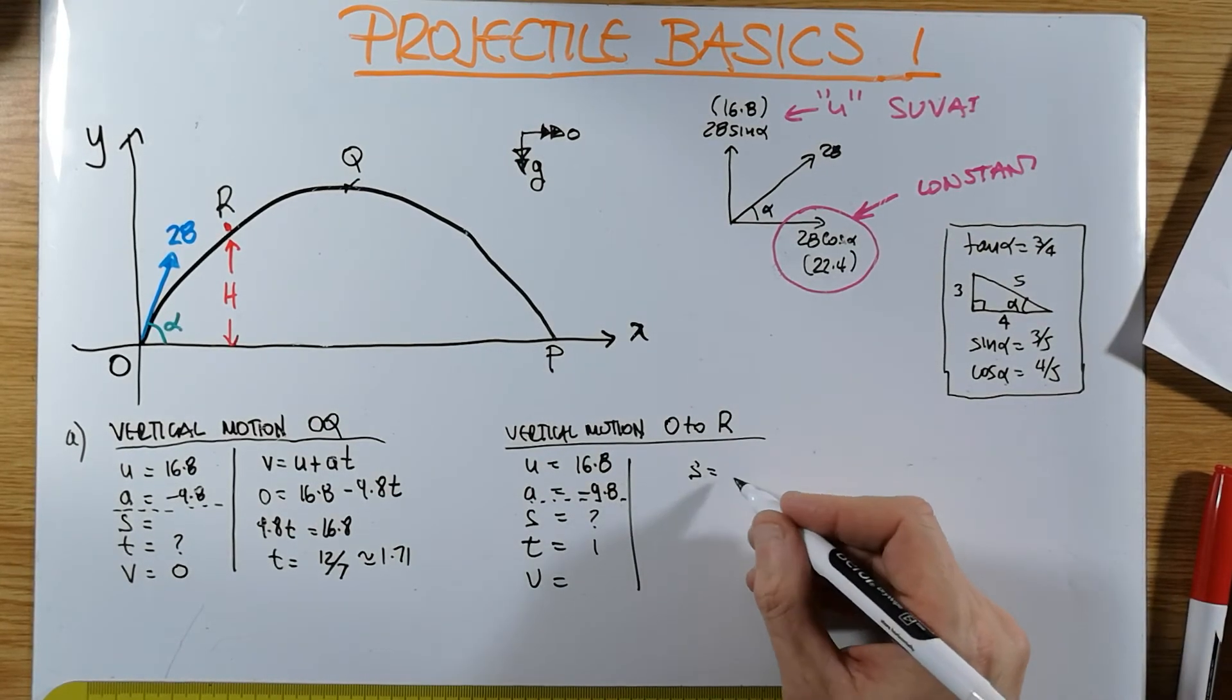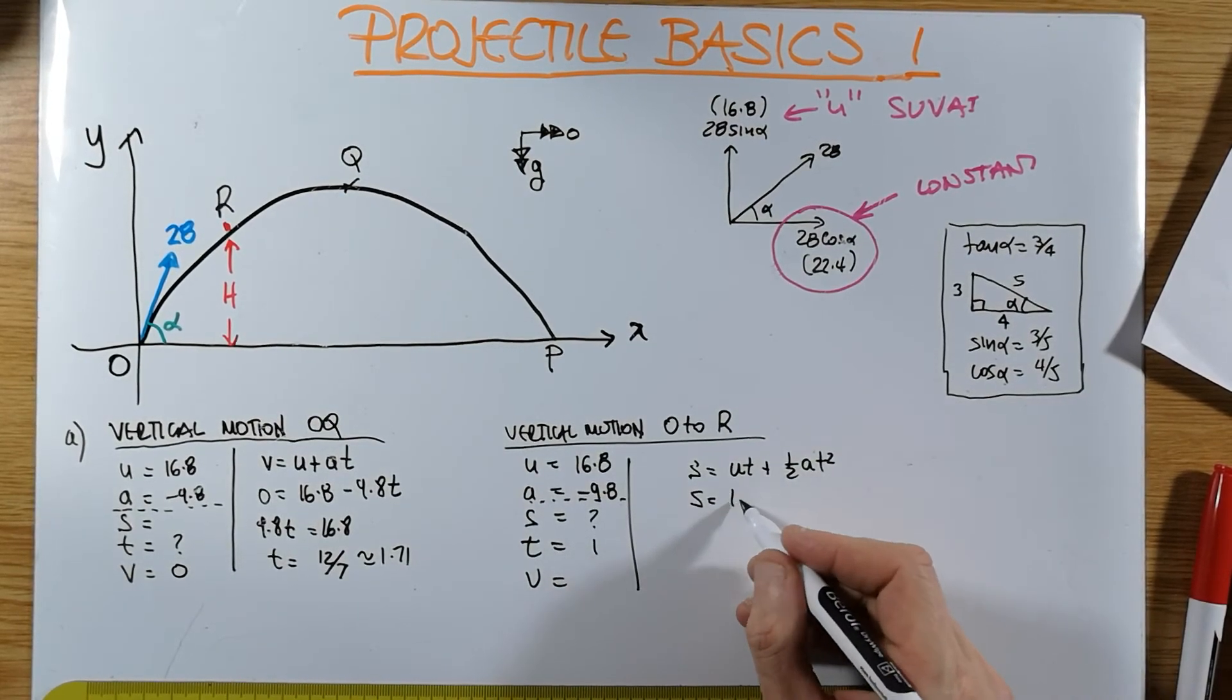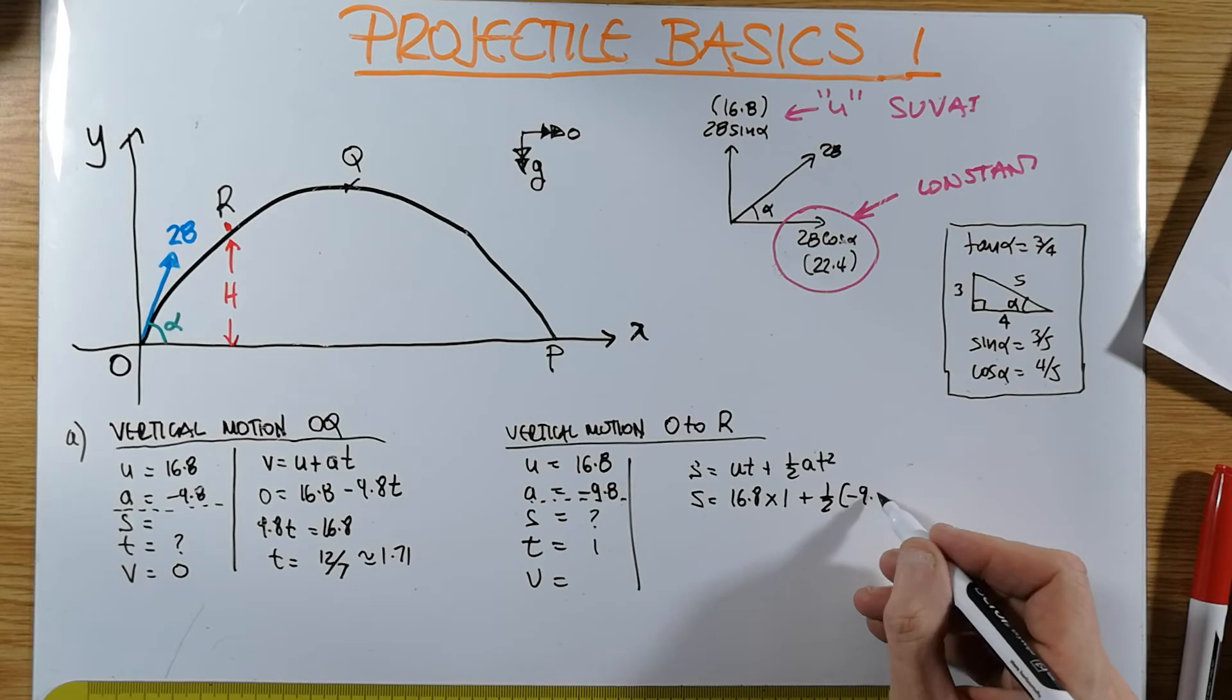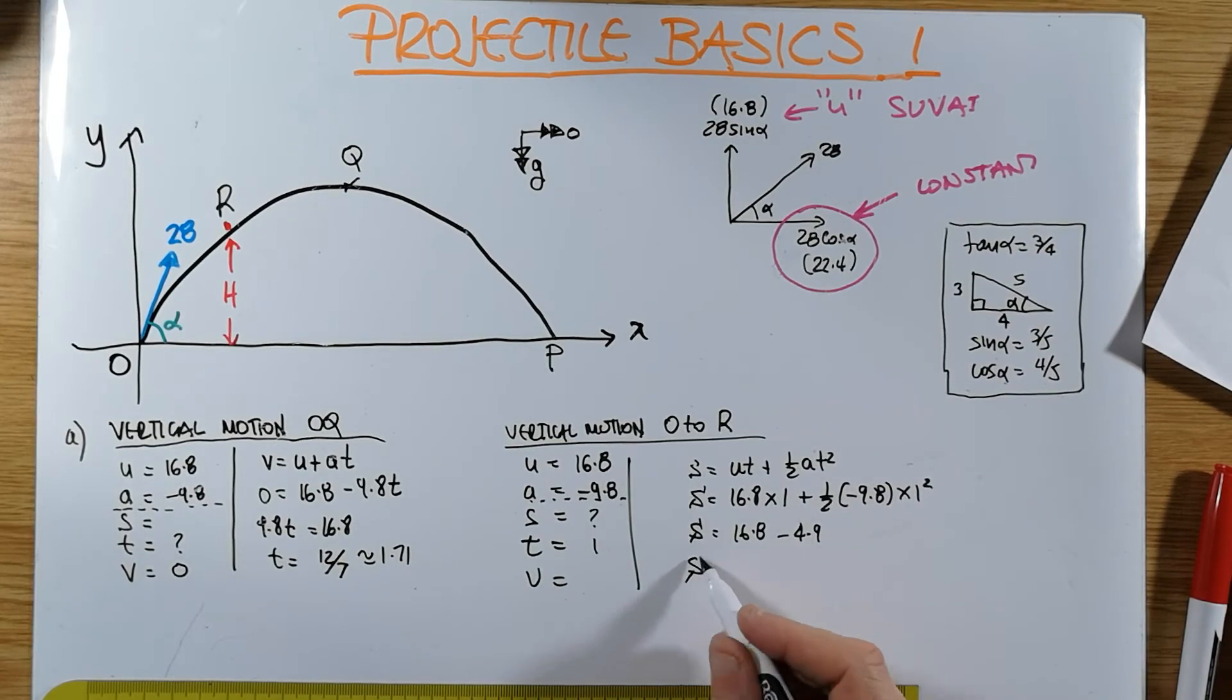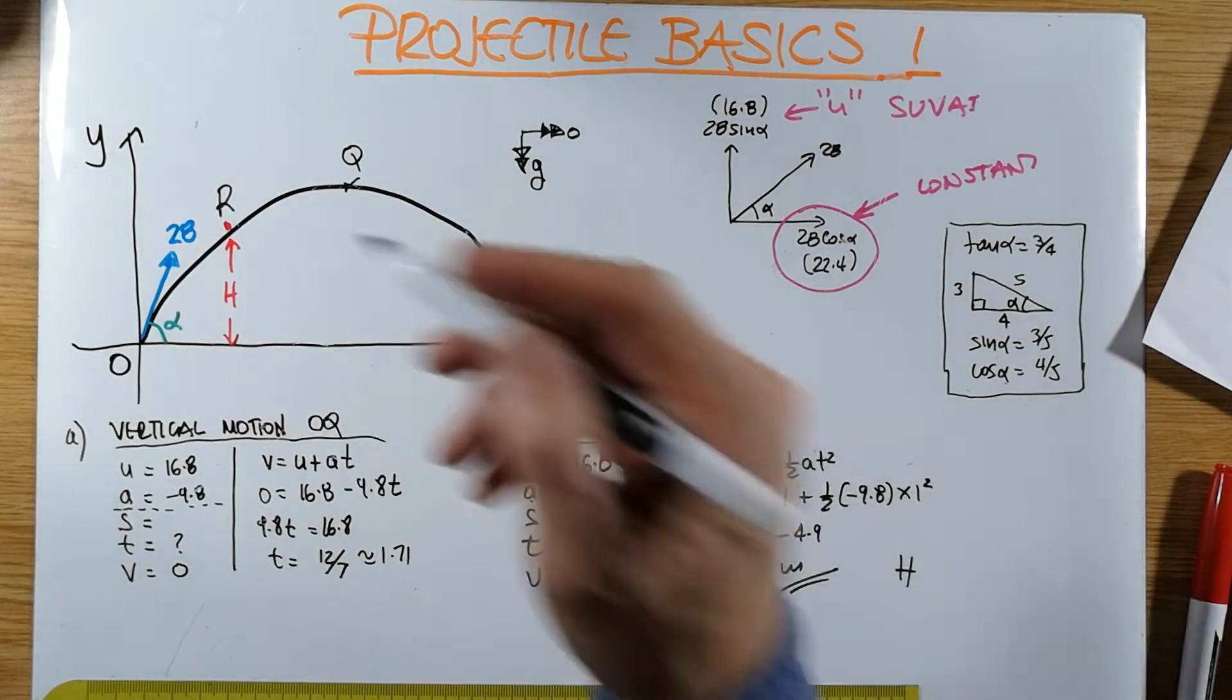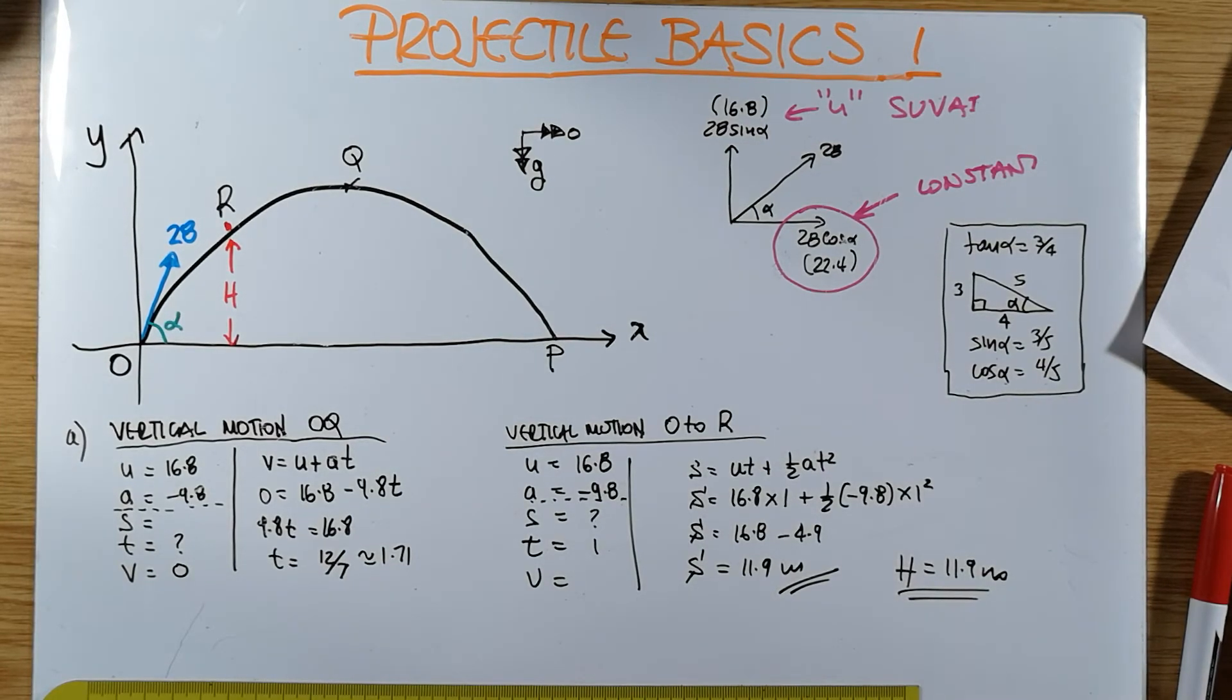S is equal to 16.8 times 1, plus a half times negative 9.8 times 1 squared. That's actually very easy numbers. So my S will be equal to 16.8 minus 4.9. S will be equal to 11.9. 11.9 meters. That's in fact your height. So height is 11.9 meters. Even if you left it as 11.9 with an S next to it, it's good enough. We found the value of height.